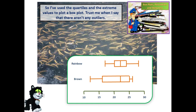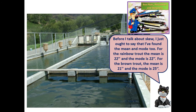I've used the quartiles and the extreme values to plot a box plot. Trust me when I say there aren't any outliers. Before I talk about skew, I just ought to say that I've found the mean and mode too. For the rainbow trout, the mean is 22 inches and the mode is 22 inches. For the brown trout, the mean is 21 inches and the mode is 25 inches.